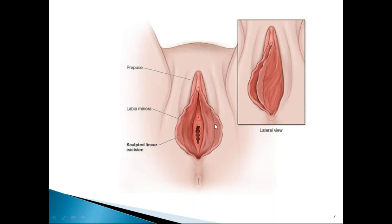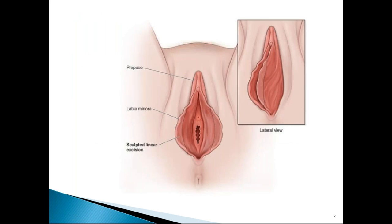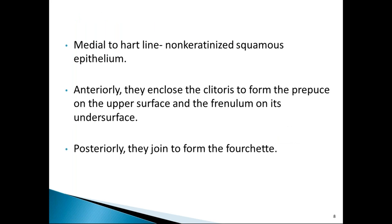The Hart's line divides labia minora into medial and lateral. The lateral part of the inner surface is covered by thinly stratified keratinized squamous epithelium, and medial to the Hart's line is non-keratinized squamous epithelium. Anteriorly the labia minora enclose the clitoris above as a prepuce and below as a frenulum, and posteriorly join to form the fourchette.